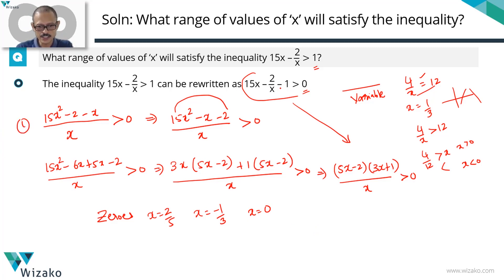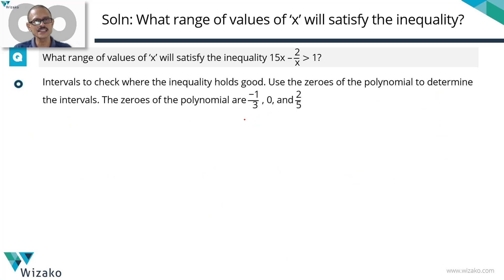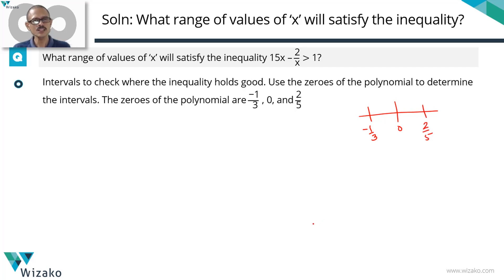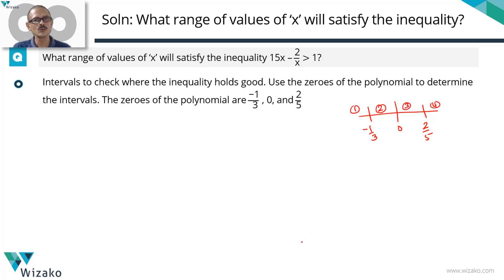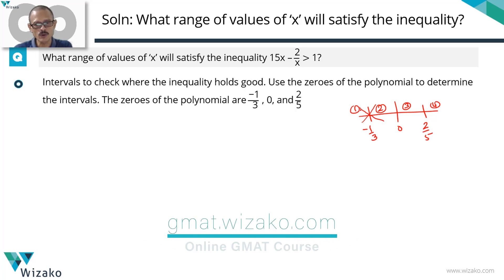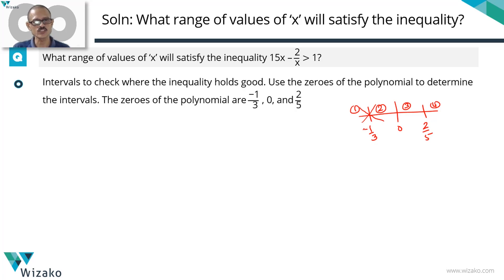Step 1: get everything to one side and rewrite in factorized form. Step 2: identify the zeros of the polynomial. Step 3: find the intervals where the inequality holds good. We write all zeros in ascending order — minus 1 by 3, 0, and 2 by 5 — and plot them on a number line. This gives us four intervals to check: values less than minus 1 by 3; between minus 1 by 3 and 0; between 0 and 2 by 5; and greater than 2 by 5. We check whether the expression is positive or negative in each interval by substituting a friendly number.